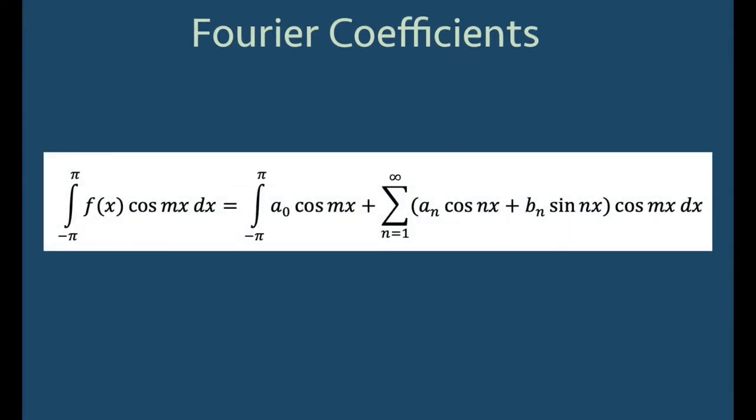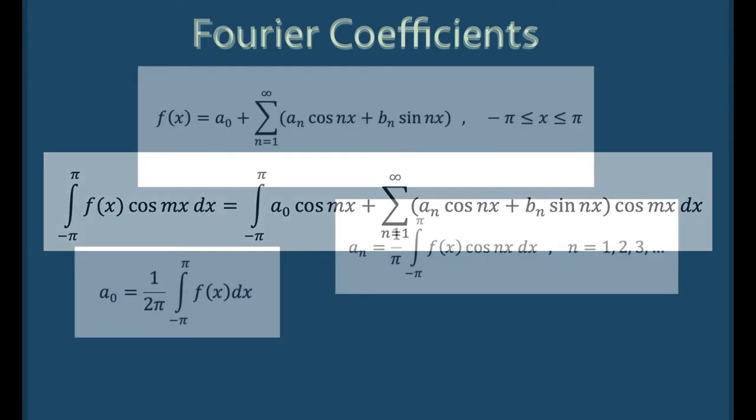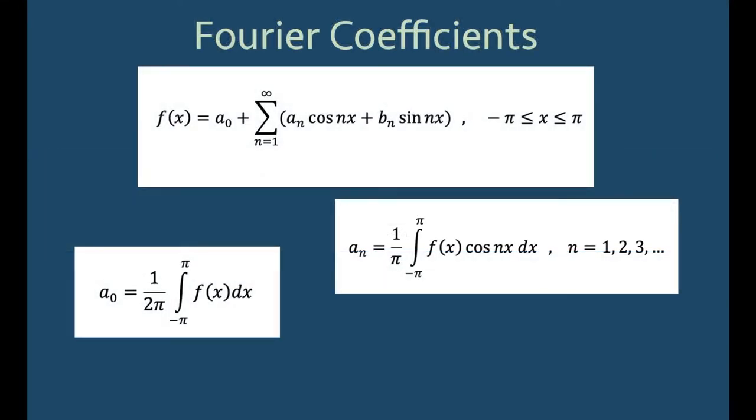Next, if we multiply both sides of the equation for f(x) by cos(mx) for an integer m greater than or equal to 1, and then integrate over the interval negative pi to pi, we get the coefficient an = 1/π times the integral from negative pi to pi of f(x)*cos(nx) dx, where n = 1, 2, 3, etc.